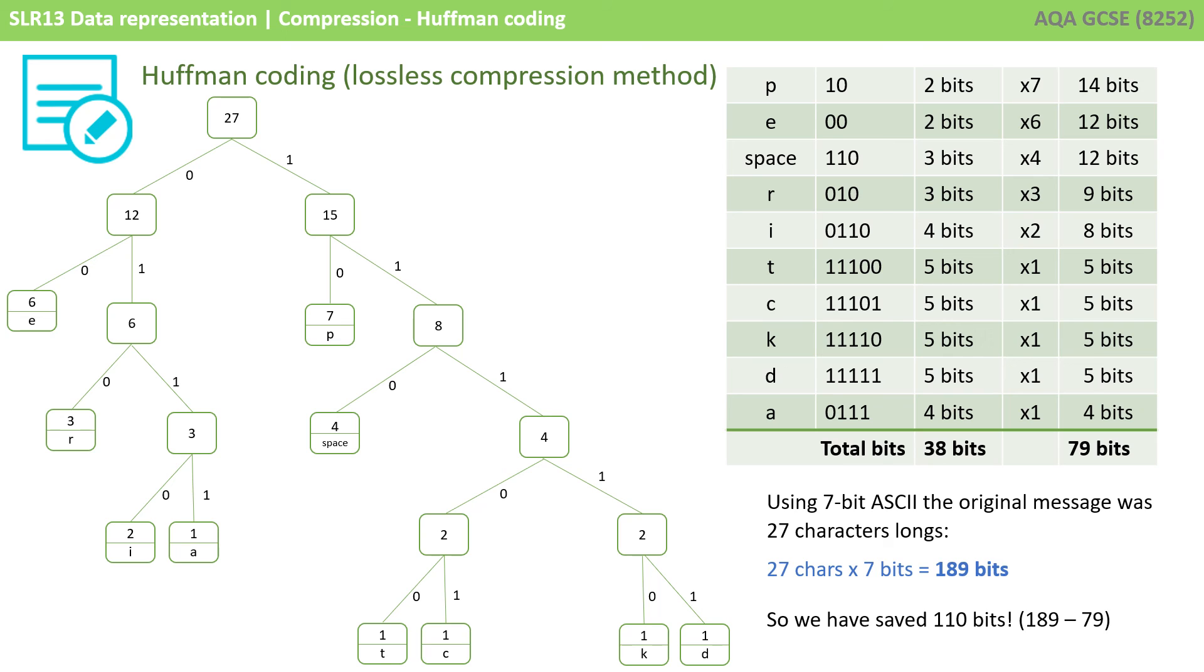Using normal 7-bit ASCII, the original message was 27 characters long, so that would have been 27 characters times 7 bits per character, or 189 bits. So, we've saved 110 bits by using Huffman coding.